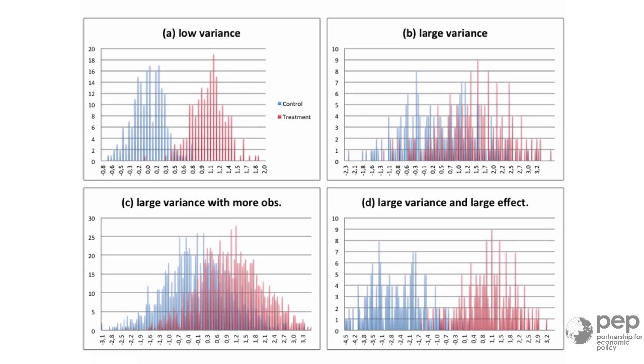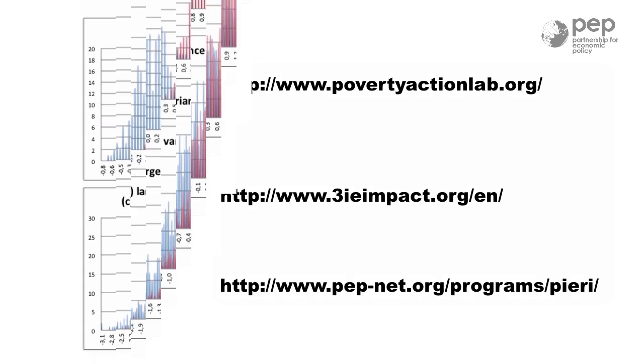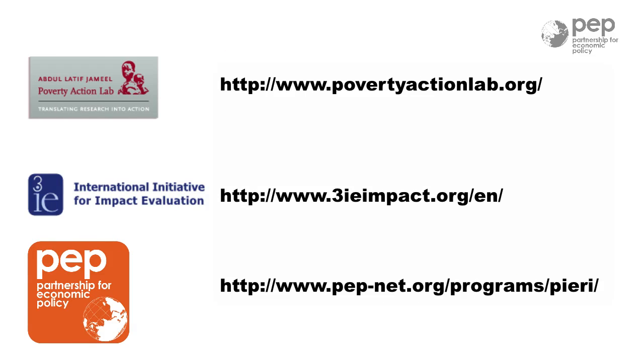To calculate variation in a perfect world you use pre-program data on the outcome variable. In real life you use similar data hopefully from other regions in the same country. Luckily for us there is a growing set of available information on previous evaluation. Some websites have available actual datasets. Once you properly reference your sources there is no problem in using information from similar programs.